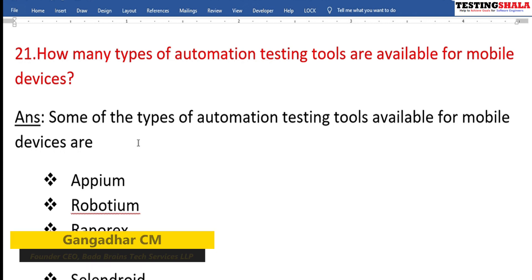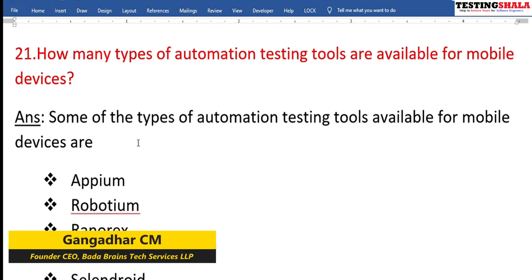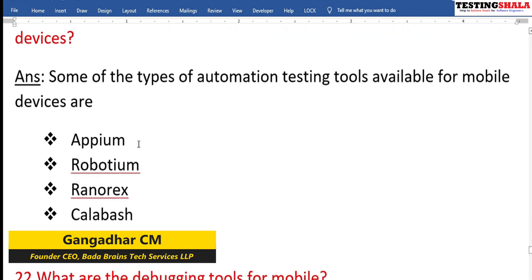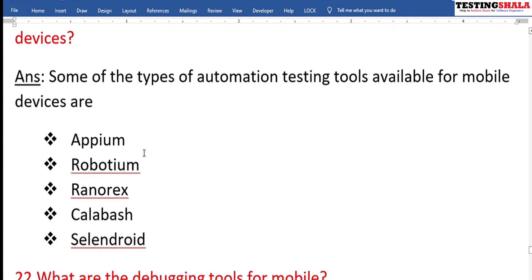Can you name some important automation tools for mobile application testing? There are various tools available: Appium, Robotium, Ranorex, Calabash, and Selendroid — which is a combination of Selenium and Android. These are the tools we can use to bring automation to your mobile application.